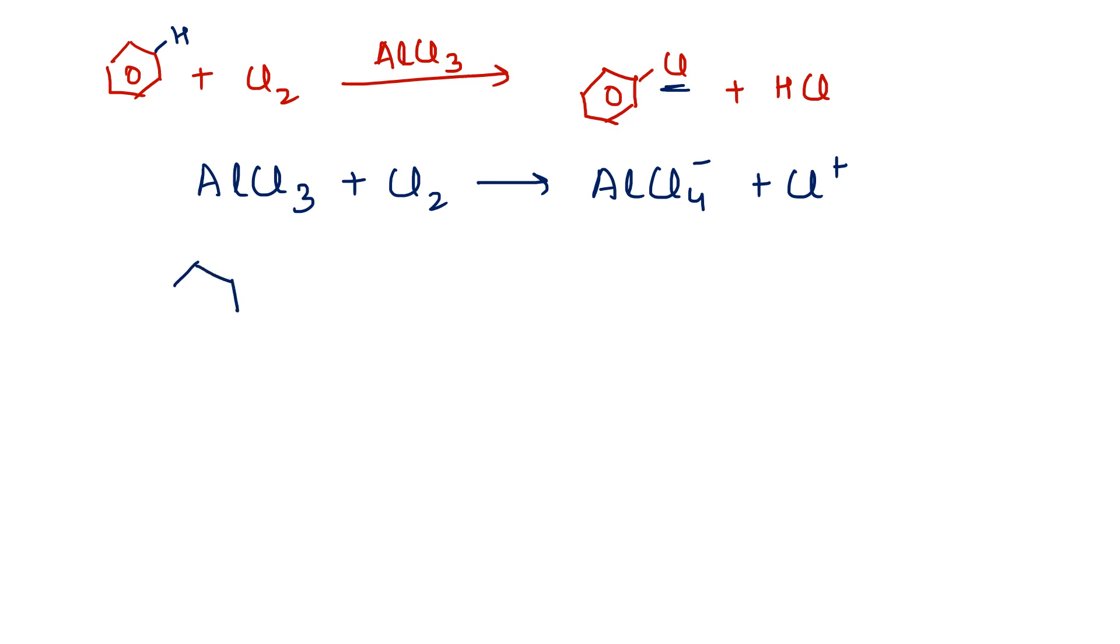The benzene which is an electron cloud can react with Cl positive to give a cation. One CH bond was already present and one new CCl bond is formed. But this cation is very much unstable.